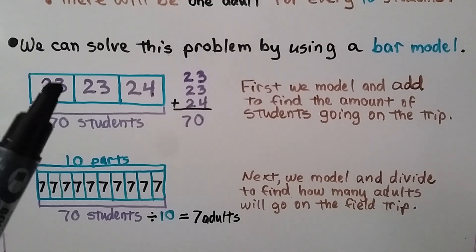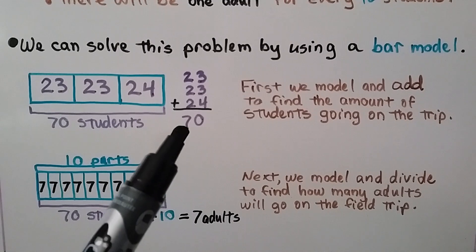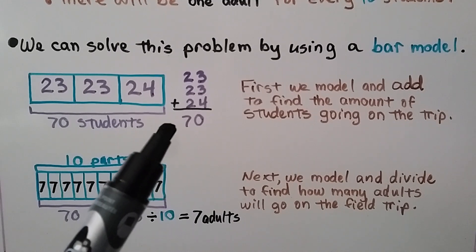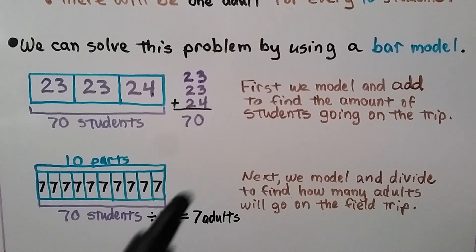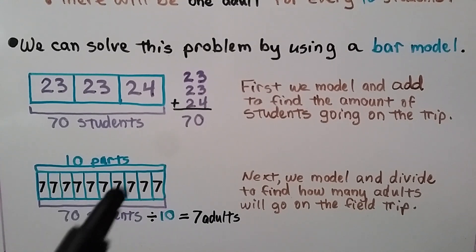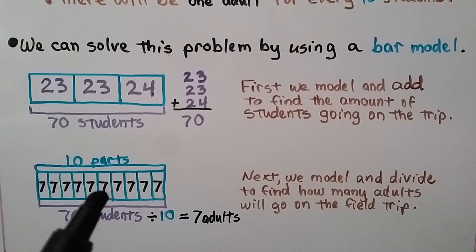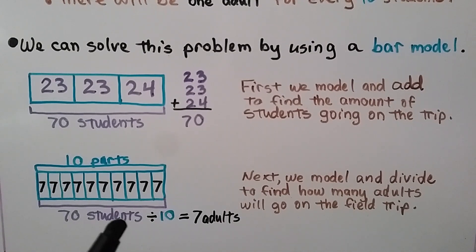We can solve this problem by using a bar model. We know there are 23, 23, and 24 students. We total it and get 70 students. So we model and add to find the amount of the students going on the trip. Next, we model and divide to find how many adults will go on the trip. We know there are 70 students in all, and we can make a bar with 10 parts because there's going to be 10 children with each adult. We get 7. 70 students divided by 10 is equal to 7 adults.